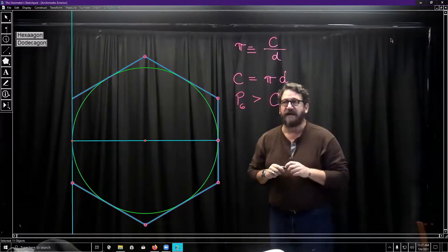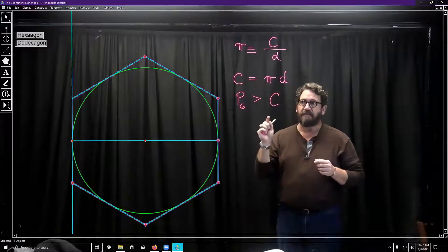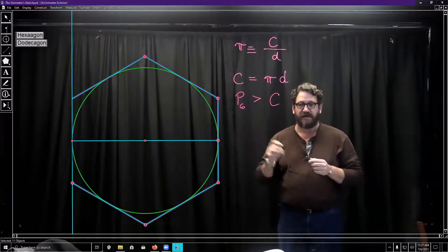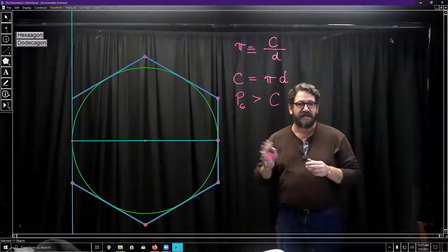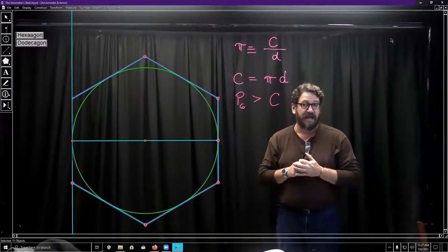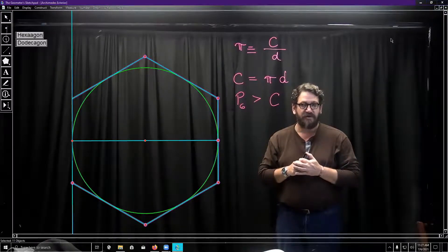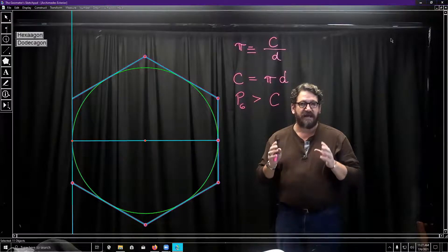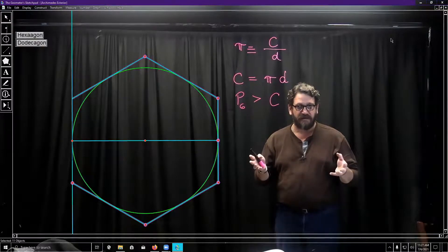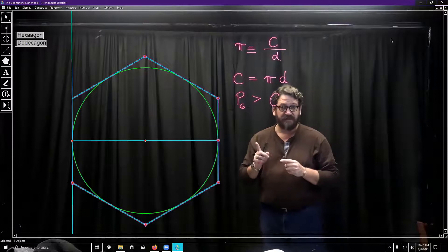Now then the second step is going to be to say, all right, if I can put a hexagon around this, now what I'm going to do is I'm going to divide each side of the hexagon in half. And by doing that, I'm going to create yet another polygon to go around this. Let's take a look.